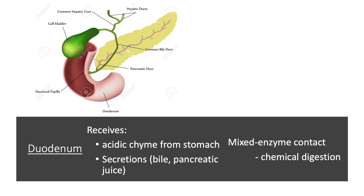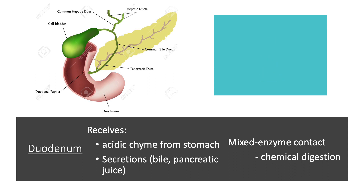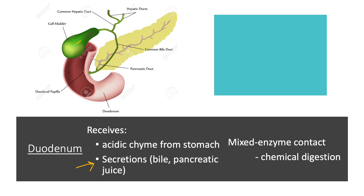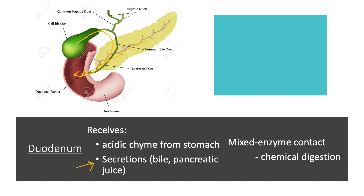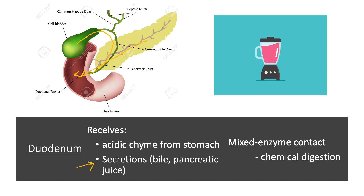The first section of the small intestine, the duodenum, serves as an anatomical blender. The duodenum receives that acidic chyme from the stomach, and then we mix in secretions from our accessory digestive organs — bile from the gallbladder or digestive enzymes from the pancreas — and these are thoroughly mixed with that acidic chyme. This mixing increases contact with ingested molecules, and the majority of chemical digestion actually occurs within the duodenum.